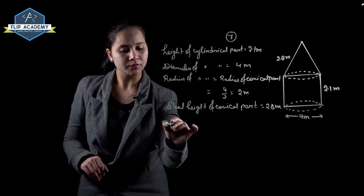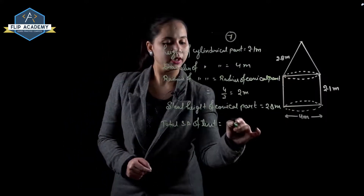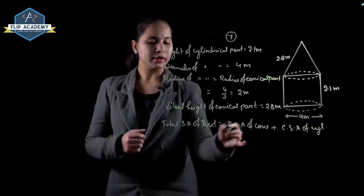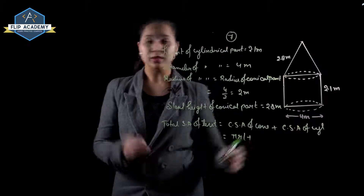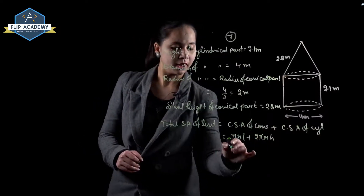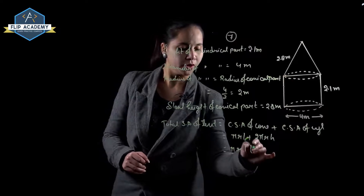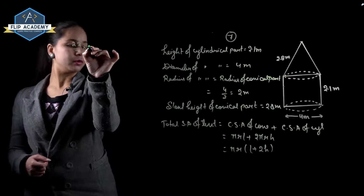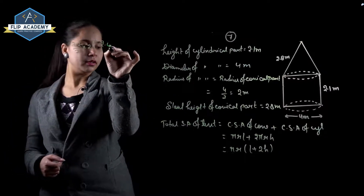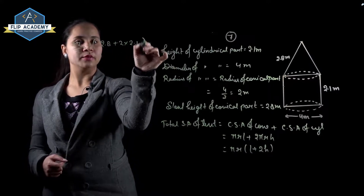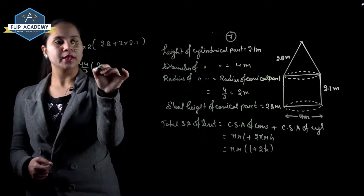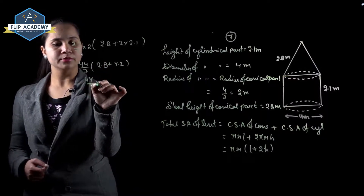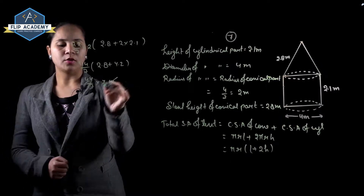Total surface area of tent equals CSA of cone plus CSA of cylinder. CSA of cone is pi r l, and CSA of cylinder is 2 pi r h. Taking pi r as common, we get pi r into bracket l plus 2h. So 22 upon 7 into 2 into bracket 2.8 plus 2 into 2.1, giving 44 upon 7 into bracket 2.8 plus 4.2.